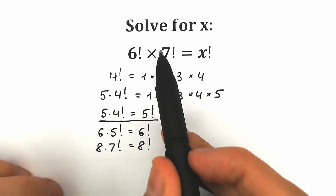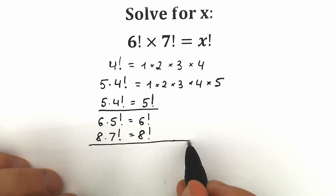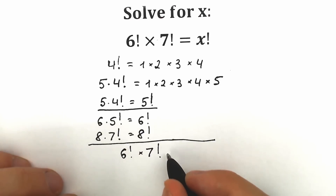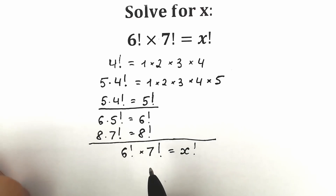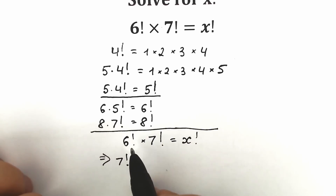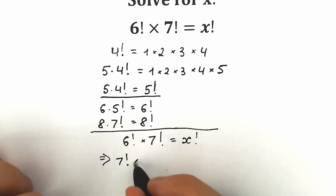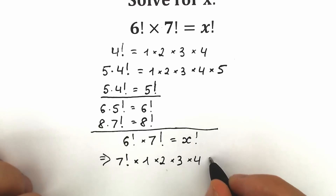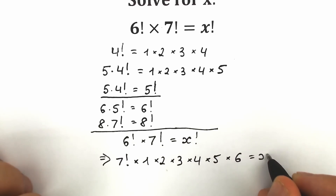So first of all, let's leave this 7 factorial as it is. Here's our question: we have 6 factorial times 7 factorial equals x factorial. Let's leave 7 factorial on the left side, and let's write 6 factorial as a product: 1 times 2 times 3 times 4 times 5 times 6. So we have 7 factorial times 1 times 2 times 3 times 4 times 5 times 6, equal to x factorial.